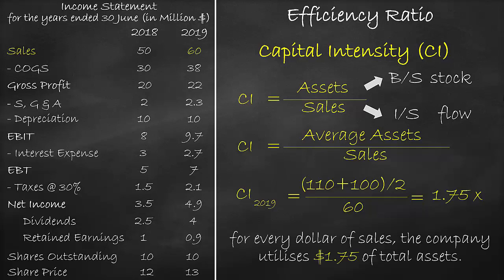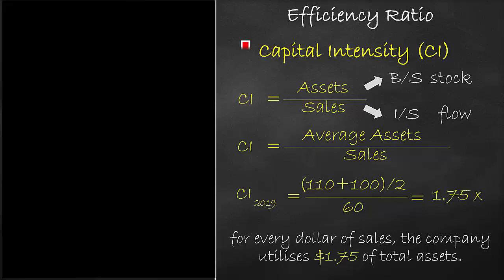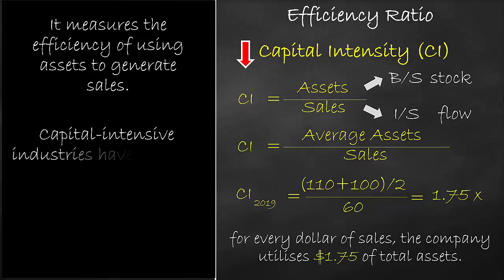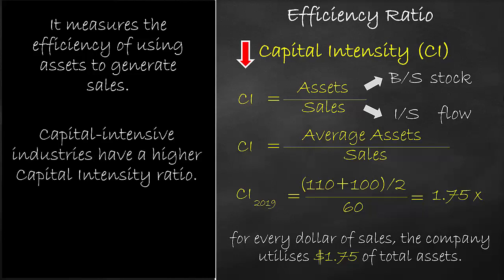As we said before, the lower the capital intensity ratio, the better. It measures the efficiency of using assets to generate sales. Capital intensive industries have a higher capital intensity ratio, whilst labor intensive industries have a lower capital intensity ratio.